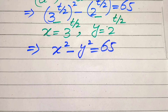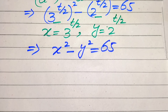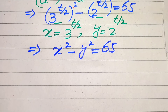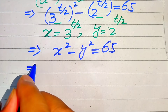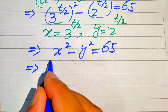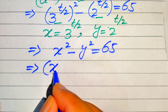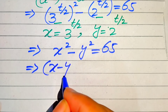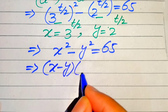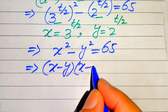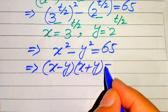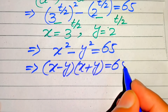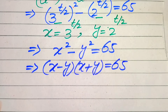Now we apply the algebraic formula: x squared minus y squared equals x minus y times x plus y, which equals 65.